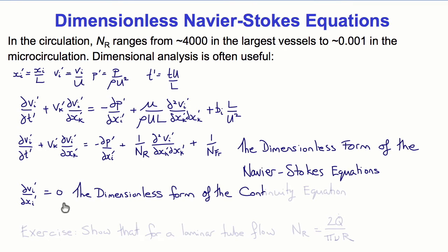This kind of dimensional analysis is very common and useful in fluid mechanics. As an exercise, you can take the solution for laminar tube flow and prove that the Reynolds number is equal to 2q dot over pi nu r, where r is the resistance and nu is the kinematic viscosity.